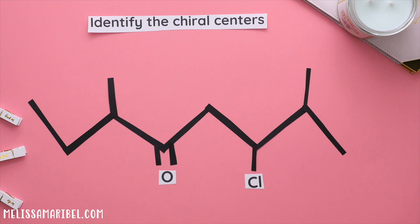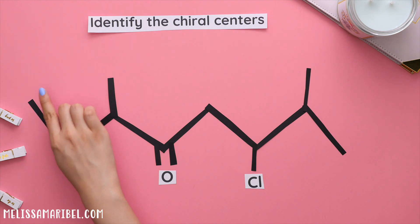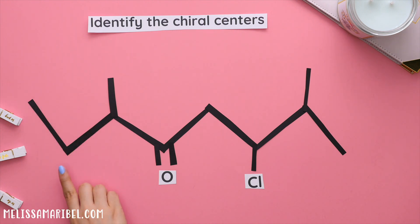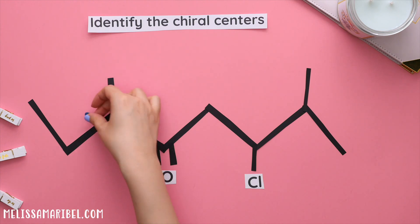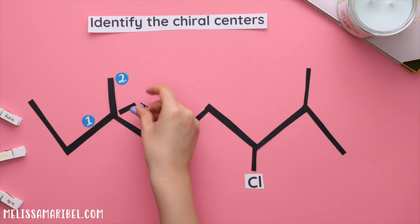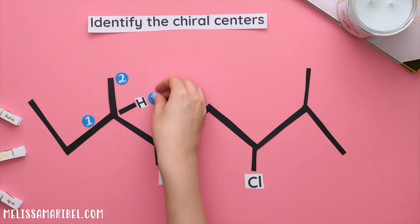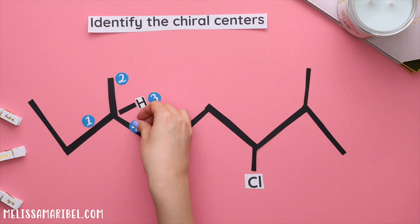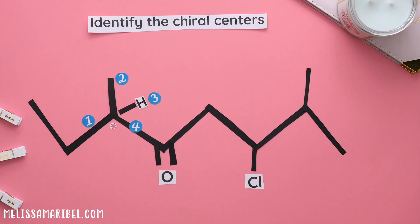To find the answer to question one, let's check each carbon and see if there are four different groups. Not enough groups. Not enough groups for the next carbon. This carbon has one, two, three, four different groups — so yes, this is a chiral center.